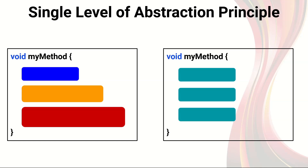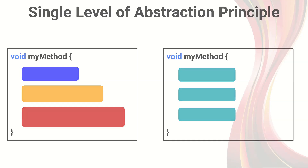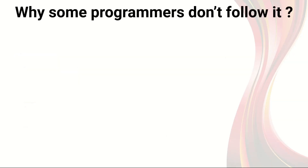It's also important to mention that respecting SLAP does not necessarily mean that your code will be shorter — it just means that it will be easier to read. This principle, even if it doesn't seem like much, is extremely important because there is a very tight relationship between readability and maintainability. Even if this principle is easy to understand and apply, yet some programmers don't follow it.